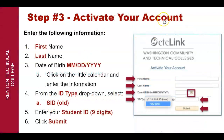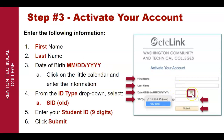Step number three: activate your account. This is the screen that you're going to have. Enter the following information: first, your first name; second, your last name; third, your date of birth — month (two digits), day (two digits), and year (four digits). You have a calendar here, so click on it and enter the information. For the ID type, use the drop-down and select 'Student ID old' or 'SID old.' Enter your student ID — that's the one with nine digits — and then click Submit.